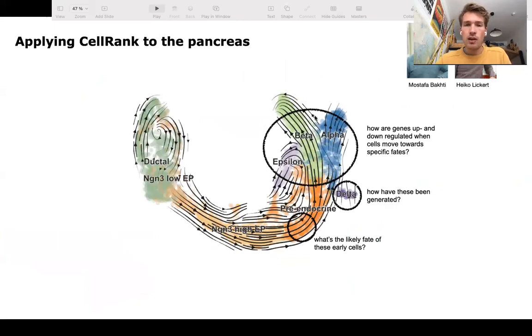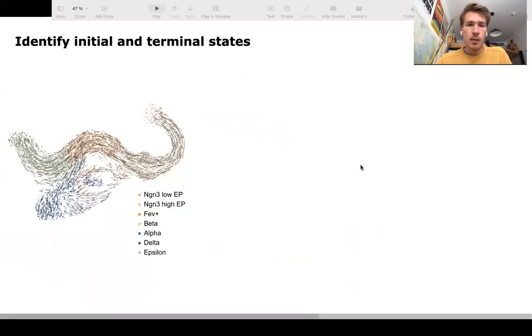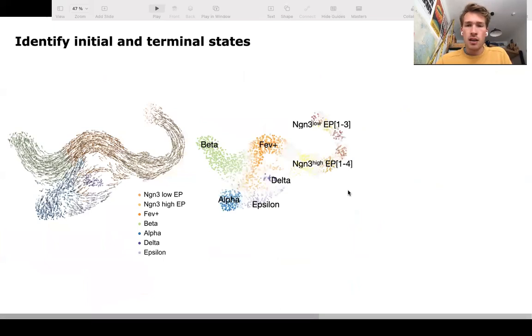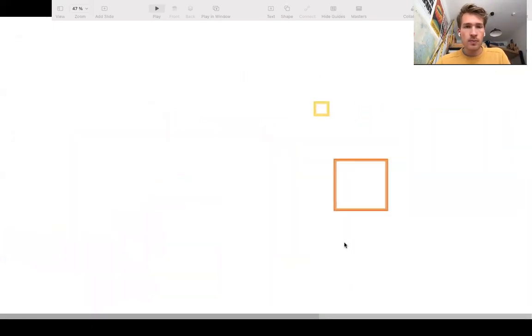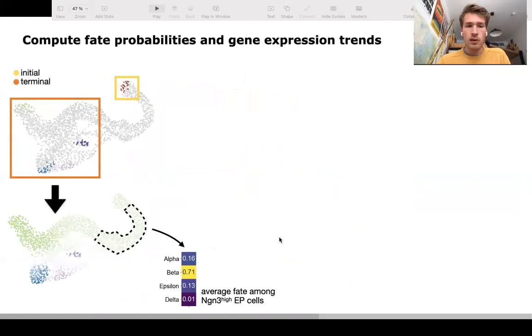We then turn to an in vivo application. Again, the pancreas. This was a collaboration with the lab of Heiko Lickert here. We computed RNA velocities, macrostates, and identified the initial and terminal states in the system.